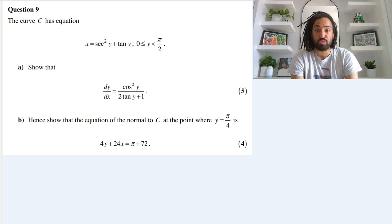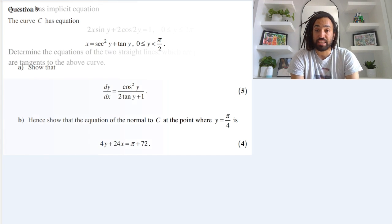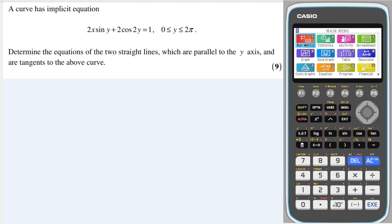So if you find it useful, please do subscribe, like and comment. Let's get into the maths. A curve has implicit equation 2x sin y plus 2 cos 2y equals 1 for y between 0 and 2 pi. Determine the equations of the two straight lines which are parallel to the y-axis and are tangents to the above curve.